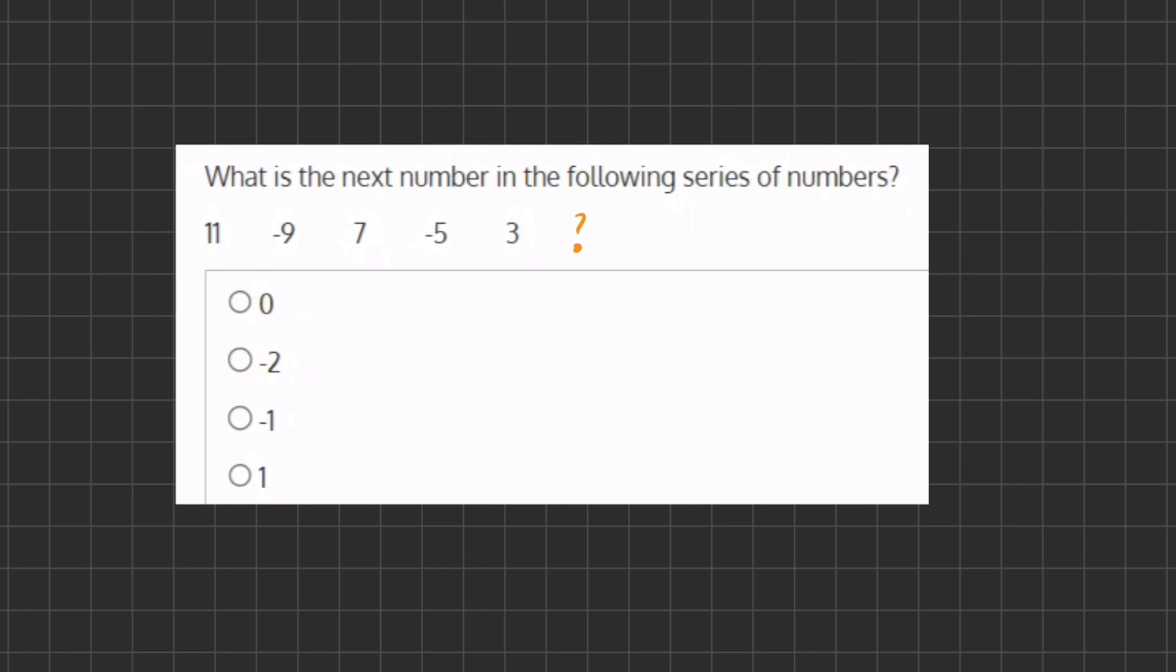So let's take a look at our transitions. Our first transition from 11 to negative 9, we subtract by 20. Moving from negative 9 to positive 7, we add 16. Moving from 7 to negative 5, we subtract by 12. And moving from negative 5 to 3, we add 8.